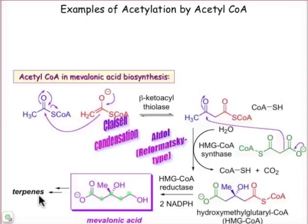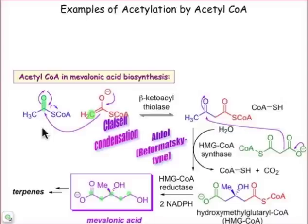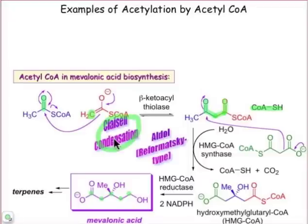The synthesis of mevalonic acid involves two molecules of coenzyme A coming together in a Claisen condensation. One molecule of coenzyme A is deprotonated at its alpha position — this looks like an enolate anion. This nucleophile does nucleophile addition to the polarized pi bond, the carbonyl of a second molecule of CoA. That generates a tetrahedral intermediate, which undergoes beta elimination, eliminating the thiol group of coenzyme A to generate a beta-ketoester. It's catalyzed by an enzyme known as beta-ketoacyl thiolase.